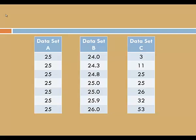Here are three new data sets. Look at data set A. What's the mean of data set A? Well, it's easy to see that the mean for data set A is 25. What's the median for data set A? That's 25 as well. And the mode, of course, is also 25.